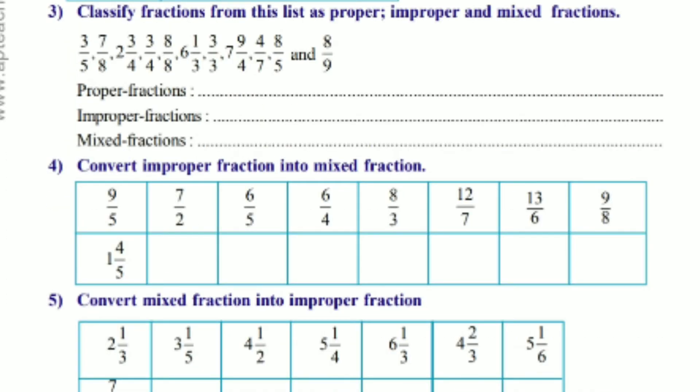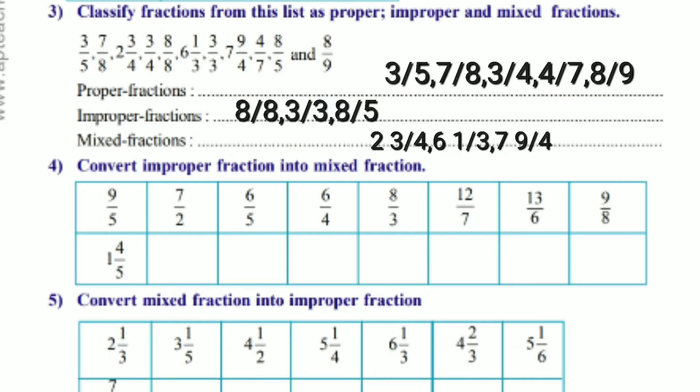Third one, Classify fractions from this list as Proper, Improper and Mixed Fraction. Answer: Proper fractions: 3 by 5, 7 by 8, 3 by 4, 4 by 7, 8 by 9. Improper fractions: 8 by 8, 3 by 3, 8 by 5. Mixed fractions: 2, 3 by 4, 6, 1 by 3, 7, 9 by 4.